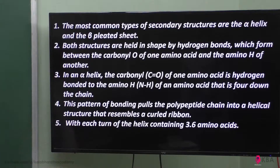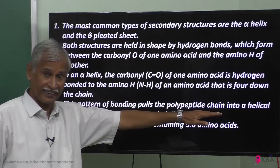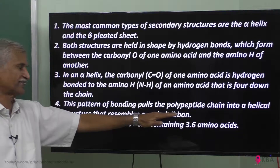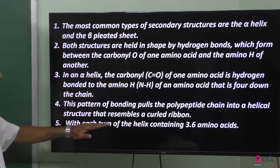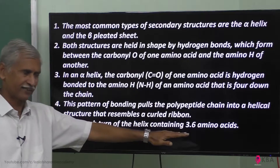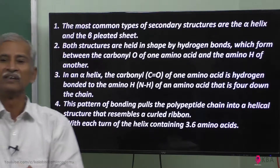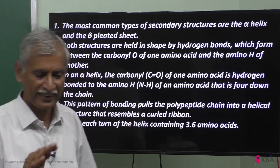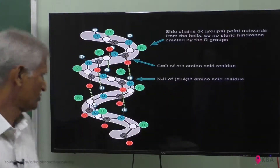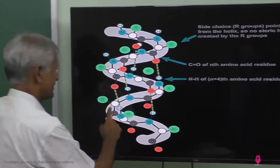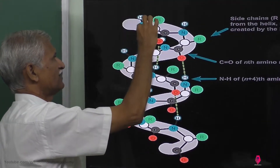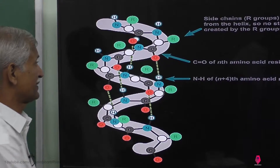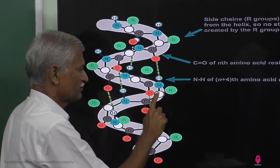This pattern of bonding pulls the polypeptide chain — a single linear chain — into a helical structure that resembles a curled ribbon. When each turn of the helix contains 3.6 amino acids — one, two, three, six amino acids — this is the alpha helical structure. This is the picture. You will see this is the alpha helical structure. In the R group, the R group is protruding out.